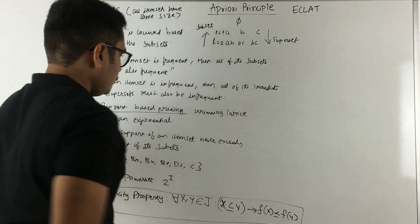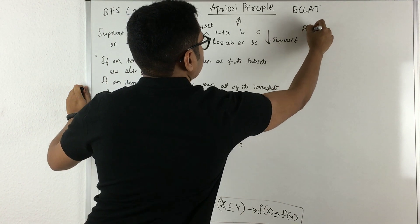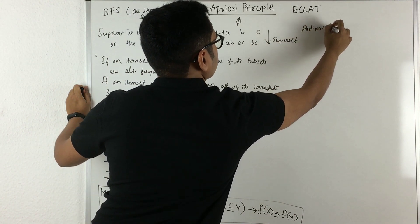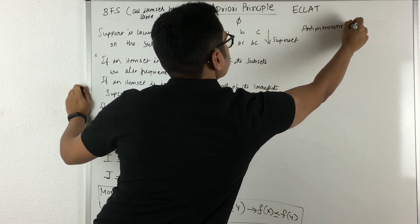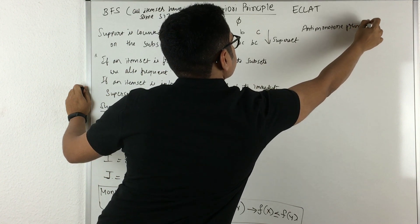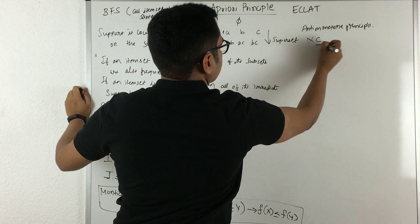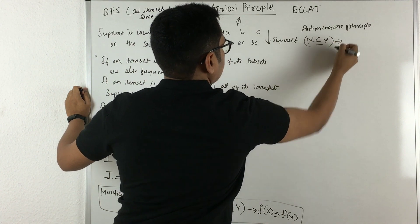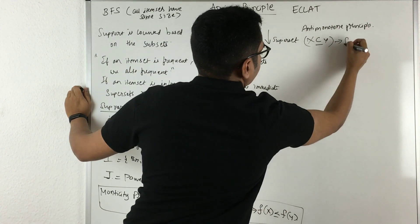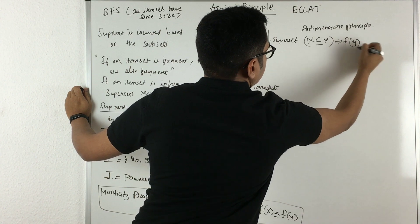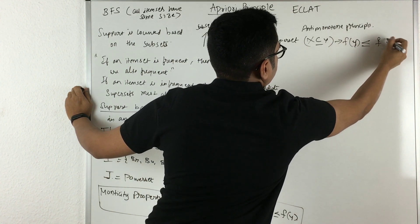Conversely, you have an anti-monotone principle. That is, for the same setting, you have X subset of Y. You have the mapping given as F of Y is less than or equal to F of X.